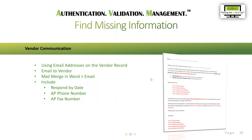For those vendors that have email addresses, I do include vendor communication. Using email addresses on the vendor record, you email the vendor. I usually use a mail merge function in Word that converts it to emails — make sure you include the respond-by date, the AP phone number, and the AP fax number. I ask them to verify their addresses if necessary, include a blank W-8 or W-9 and ask them to complete it. If they are an international vendor, I ask them to send their applicable W-8.